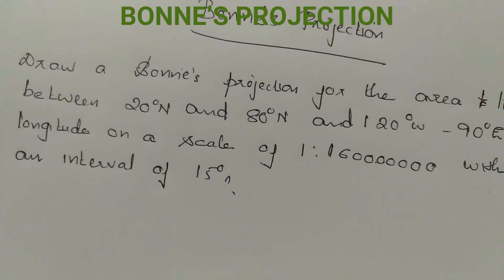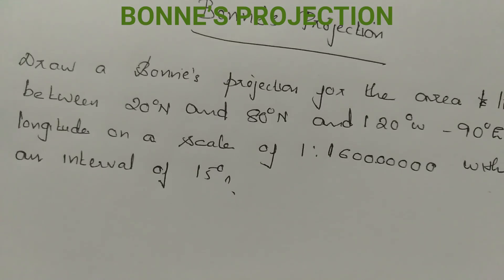In the Conical projection with one and two standard parallels, the Bonne's Projection uses concentric circles for parallels and curved lines for longitudes.